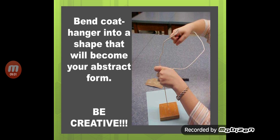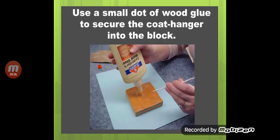Bend a coat hanger into a shape that will become your abstract form. You have to use the hanger piece and put it in the back, then twist it in the back so that it will not come out. Now you can create a tree or an abstract form. Since the assignment is particularly about abstract form, you can also add some glue.